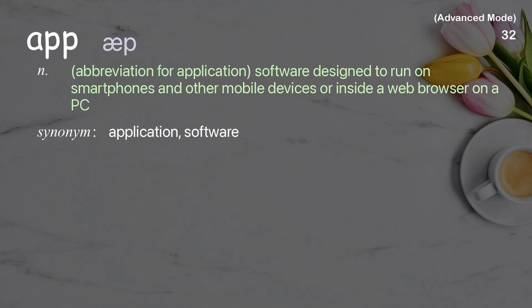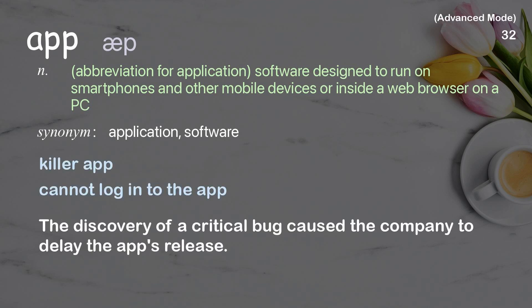App: abbreviation for application; software designed to run on smartphones and other mobile devices or inside a web browser on a PC. Examples: killer app, cannot log into the app. The discovery of a critical bug caused the company to delay the app's release.